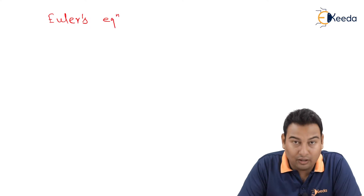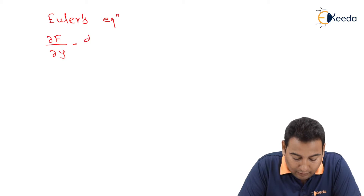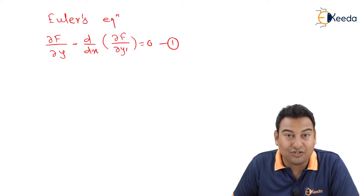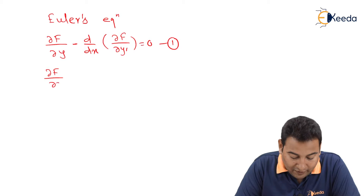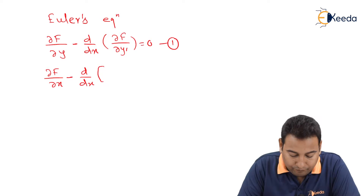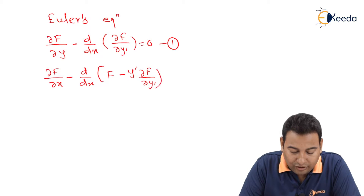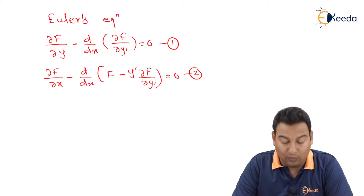There are two Euler equations. The first is ∂f/∂y − d/dx(∂f/∂y') = 0. The second equation is ∂f/∂x − d/dx(f − y'·∂f/∂y') = 0. These are the two Euler equations.